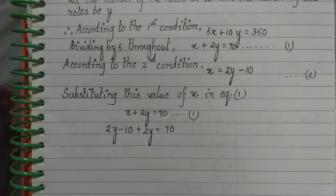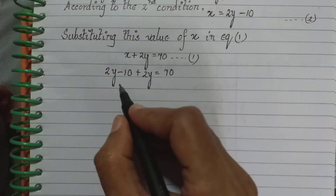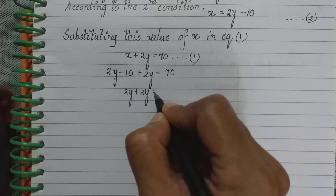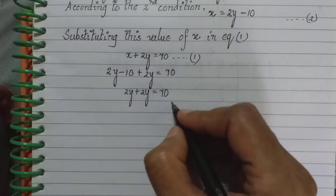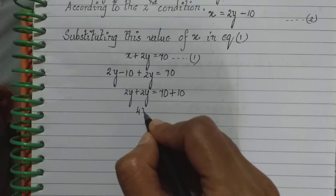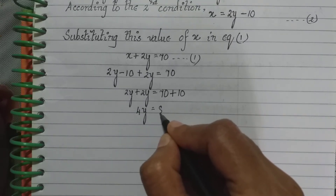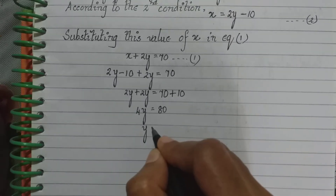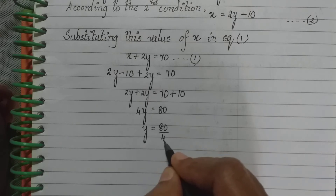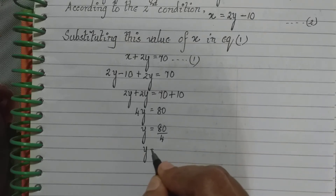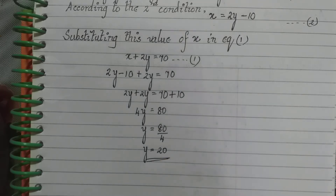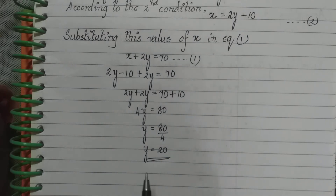Keeping Y terms together and moving numerical terms to the other side: 2Y + 2Y = 4Y on the left, and 70 + 10 = 80 on the right. So 4Y = 80, which gives Y = 80 ÷ 4 = 20. Therefore Y = 20.